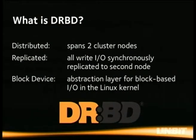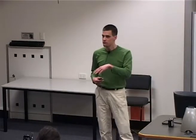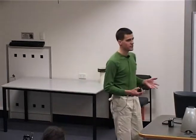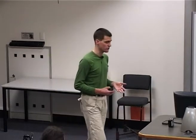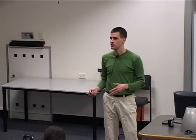DRBD officially stands for nothing, but it might be interpreted as Distributed Replicated Block Device. First and foremost, it is a block device — it lives in the kernel. We've been upstream since 2.6.33, and in a number of distributions as an out-of-tree module prior to that. It lives at the block layer of the kernel, so all it understands are blocks. It doesn't know what a file system is, and doesn't care about other workloads. If something uses a block device, you can run it on DRBD.